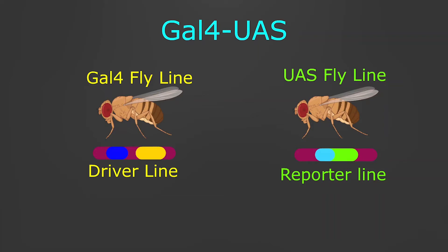In GAL4 UAS, you start with two lines of flies: one line is your GAL4 or driver line, and the other line is your UAS or reporter line.